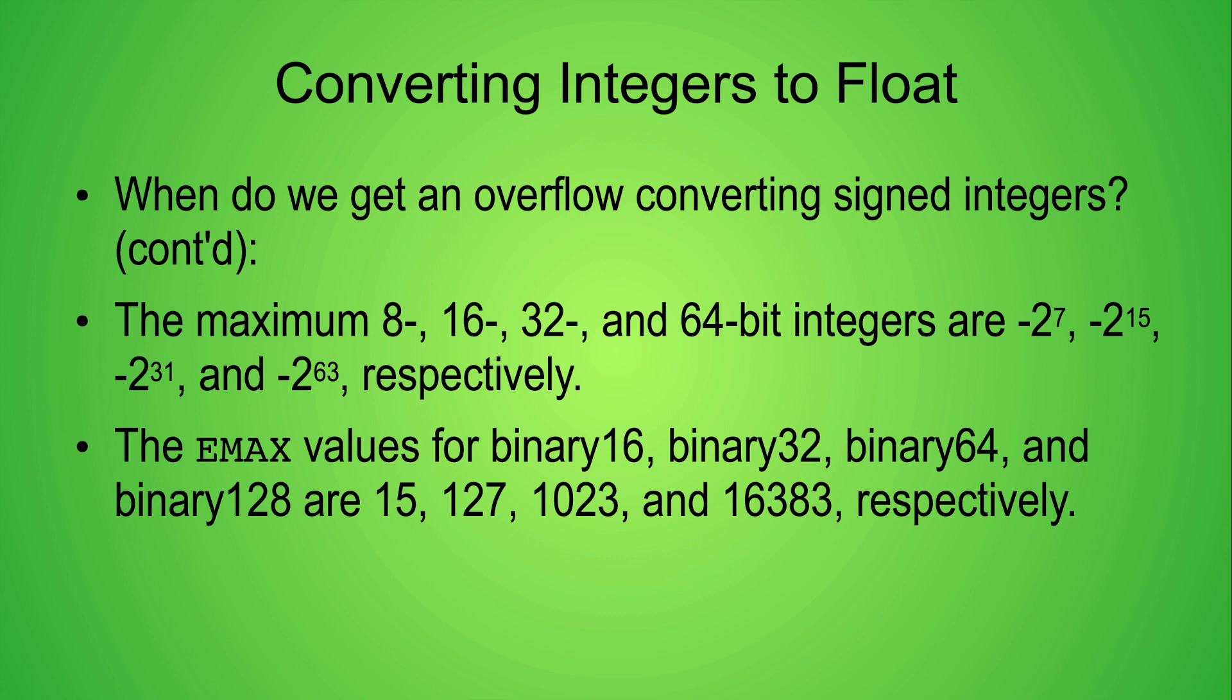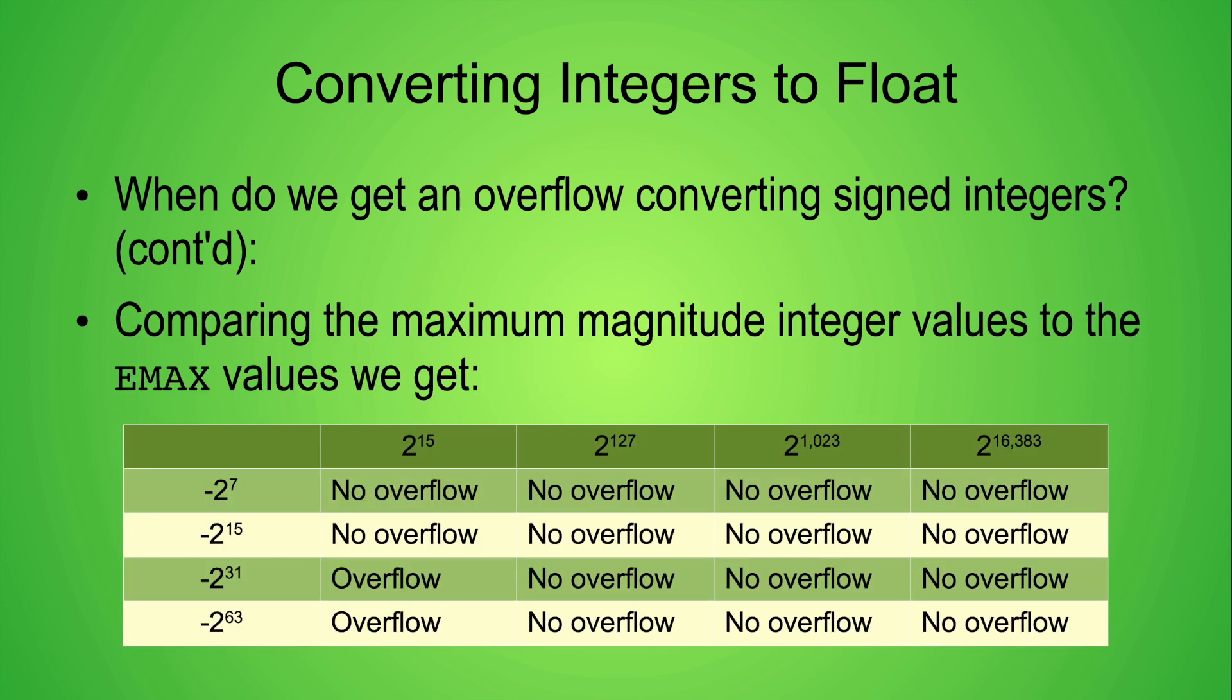By comparing the exponent sizes we can determine if an overflow is possible. Overflows are possible anytime the maximum exponent from an integer is greater than the maximum exponent for a particular floating point format. The following table shows which of the combinations can cause an overflow.